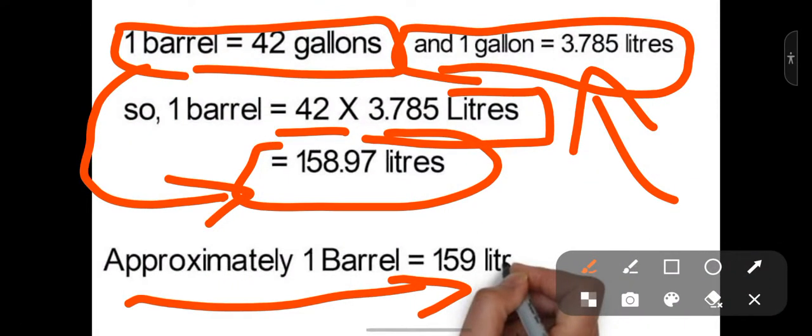...is now 100 dollars per barrel, or let's suppose 120 dollars per barrel, or 130 dollars per barrel due to Russia-Ukraine war, it means that basically the price of 159 liters of petrol is 100 or 120 dollars in the international market.